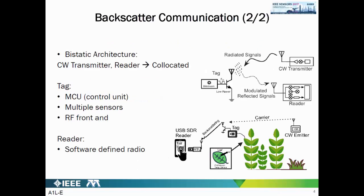Let's look at the architecture setup. In RFID we use a carrier emitter and a reader. In a bi-static architecture, the transmitter and reader are not in the same box, whereas in standard RFID they are collocated. Using this bi-static concept, we created a tag consisting of an MCU, sensors, an ADC to capture sensor information, and an RF front-end made of an antenna and switch. This allows us to measure parameters such as temperature at leaves in agricultural applications, with the reader implemented as a software-defined radio.